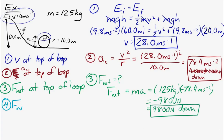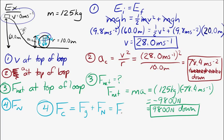Now let's find the net force. We know the mass is 125 kilograms and the acceleration is 78.4 meters per second squared downward, so the net force is 9,800 Newtons downward. For the normal force at the top of the loop, there are two forces acting there: a normal force and weight. Both act toward the center, so their sum equals the centripetal force, which equals the net force.